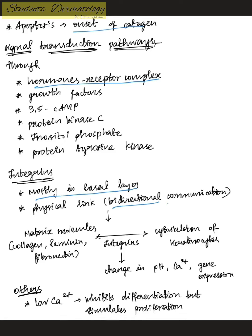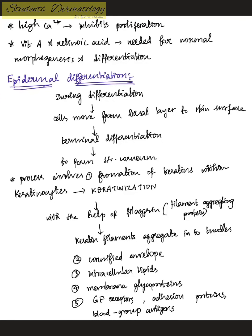Integrins are mostly present in the basal layer and provide bidirectional communication between matrix molecules like collagen, fibronectin, and laminin and the cytoskeleton of keratinocytes. Depending upon pH, amount of calcium, and gene expression, integrins help in proliferation and differentiation of epidermal cells. Low calcium inhibits differentiation by stimulation, whereas high calcium inhibits proliferation. Vitamin A and retinoic acid are needed for normal morphogenesis and differentiation of the epidermis.